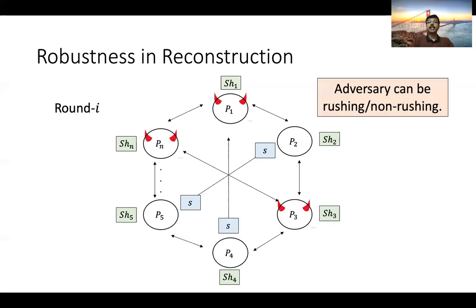We might consider an adversary that can be either rushing or non-rushing. The stronger rushing adversarial model allows a corrupted party to wait for all messages from honest parties before sending its own message in a particular round. For applications related to secure multiparty computation, it is extremely crucial that the secret sharing is robust against rushing adversaries.